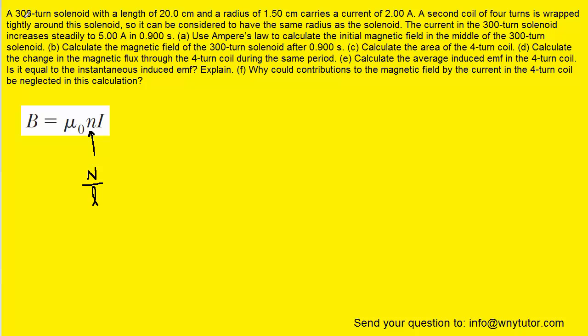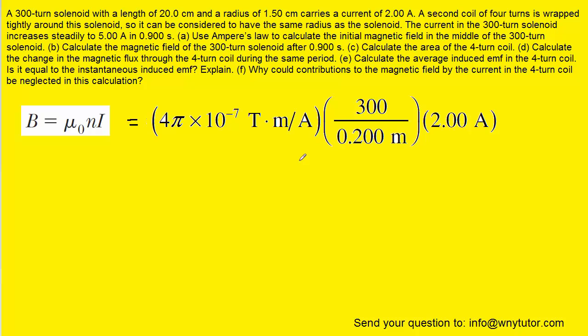We can see from the given information that the number of turns was 300, and then the length is 20 centimeters, or 0.2 meters. So we can go ahead and plug in those values for the uppercase N and the lowercase n. The current was given to us directly as 2 amps, and mu is a constant. When you crunch that down, you should get approximately 3.77 times 10 to the minus 3, and the standard unit of magnetic field will be Tesla. This would be the correct answer to part A.